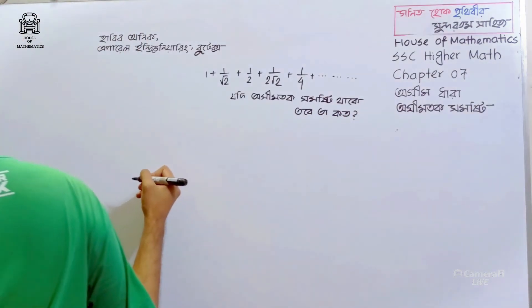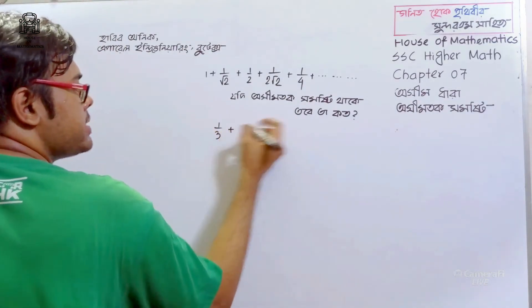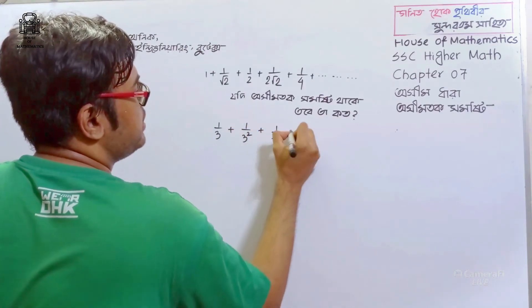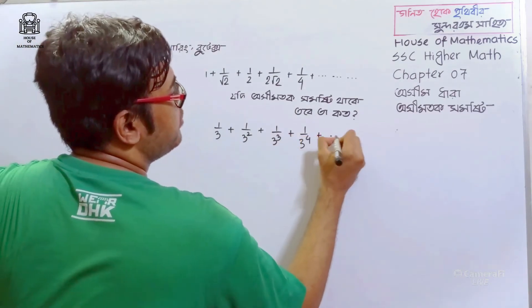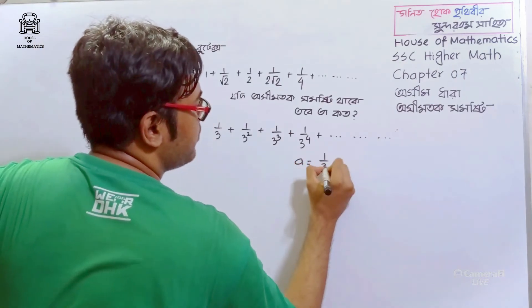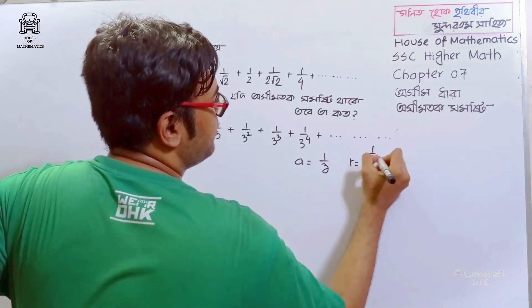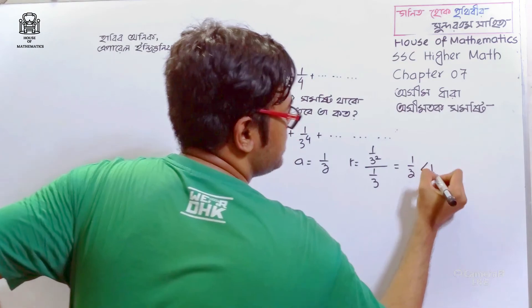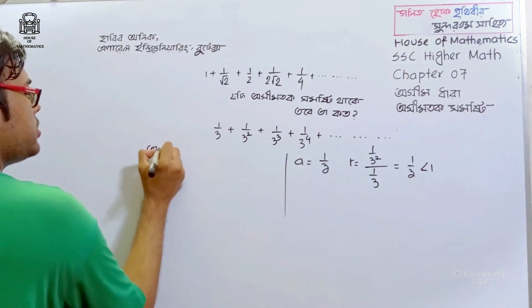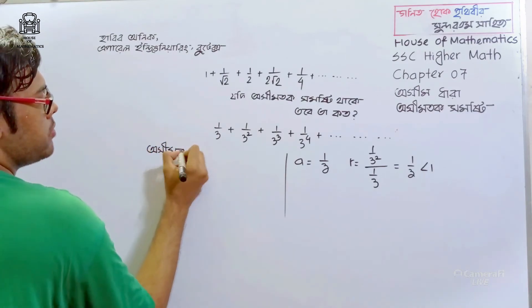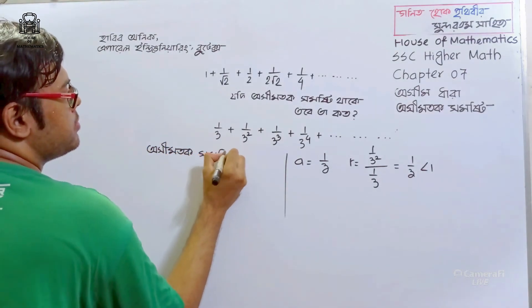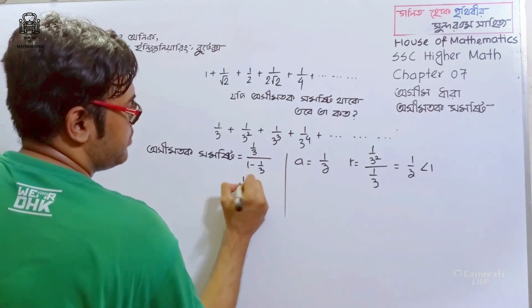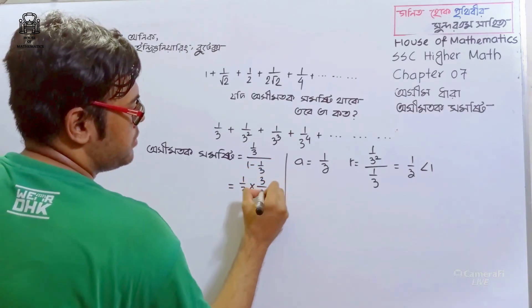Let's address this problem: 1 by 3 plus 1 by 3 squared plus 1 by 3 cubed plus 1 by 3 to the power 4 dot dot dot. Here a is equal to 1 by 3, and r equals 1 by 3 divided by 1 by 3, which is 1 by 3 — less than 1. The infinite sum is equal to 1 by 3 divided by 1 minus 1 by 3, which gives 1 by 3 times 3 by 2 = 1 by 2.